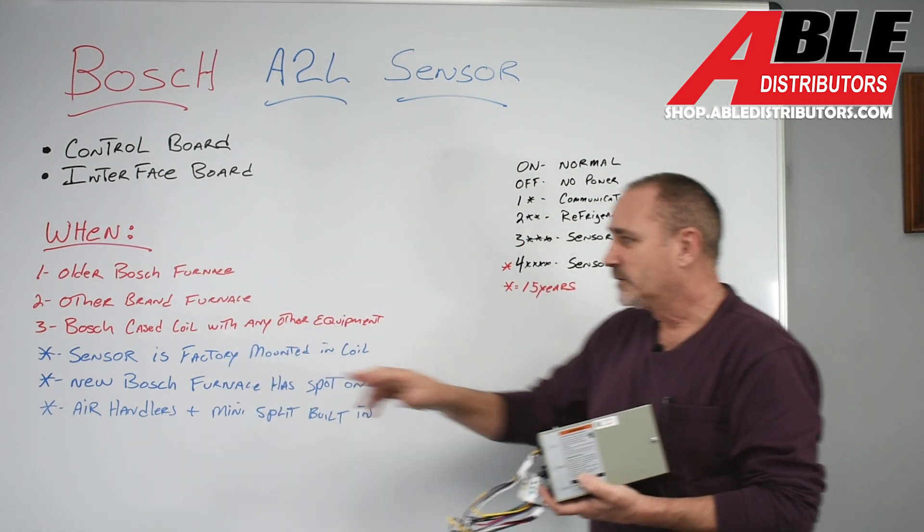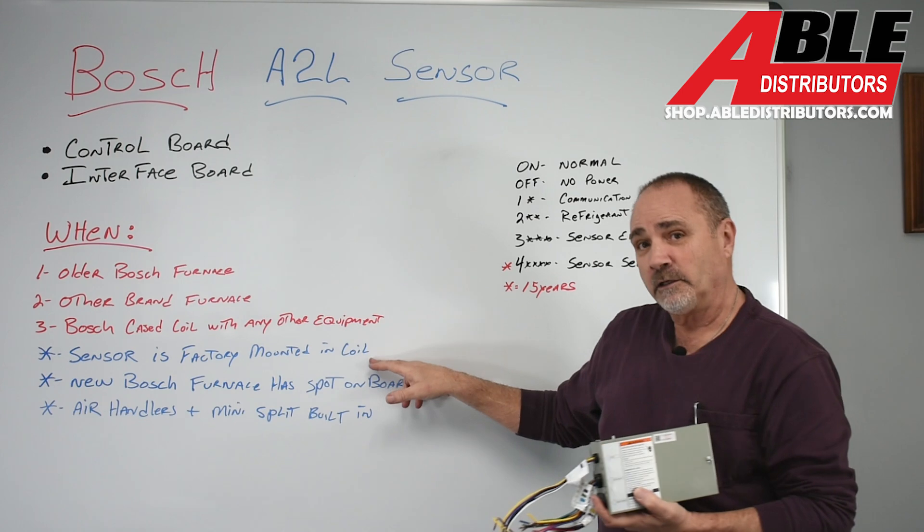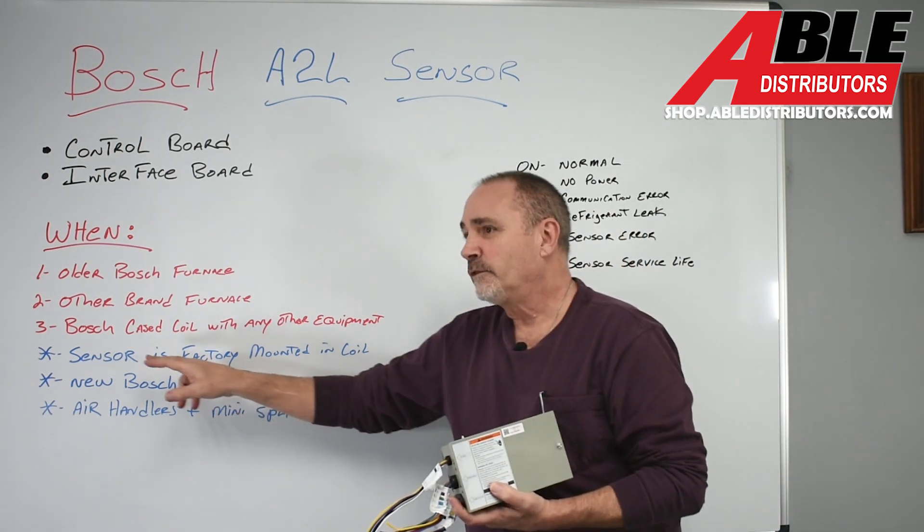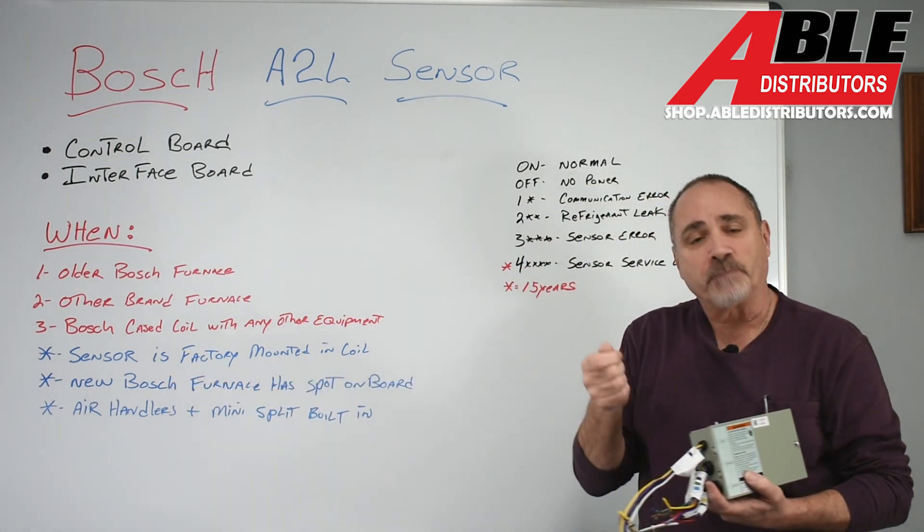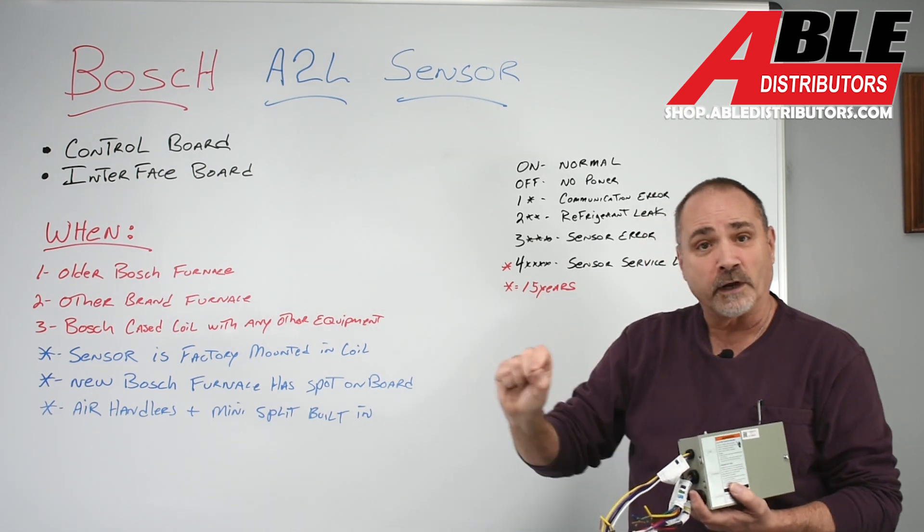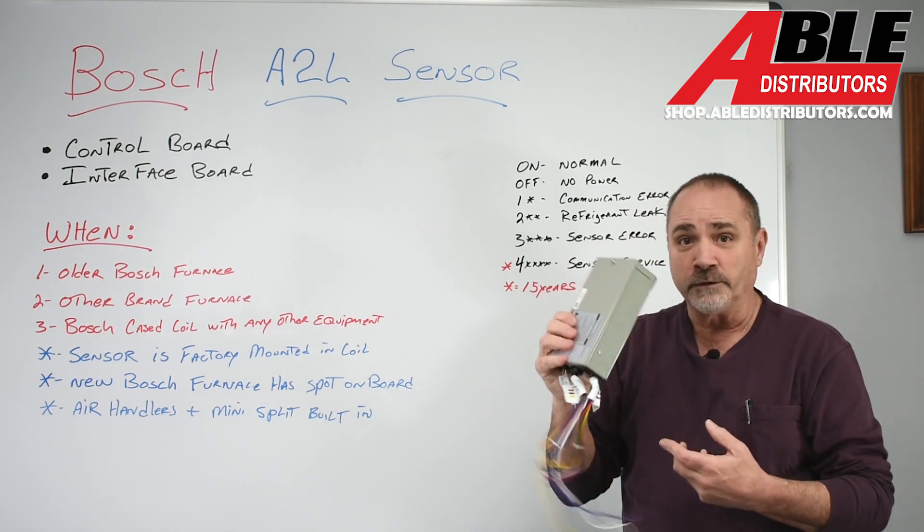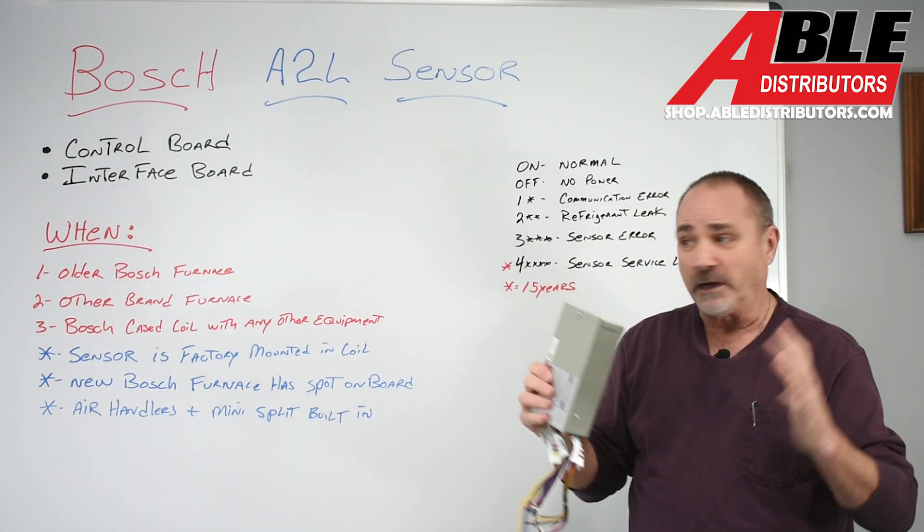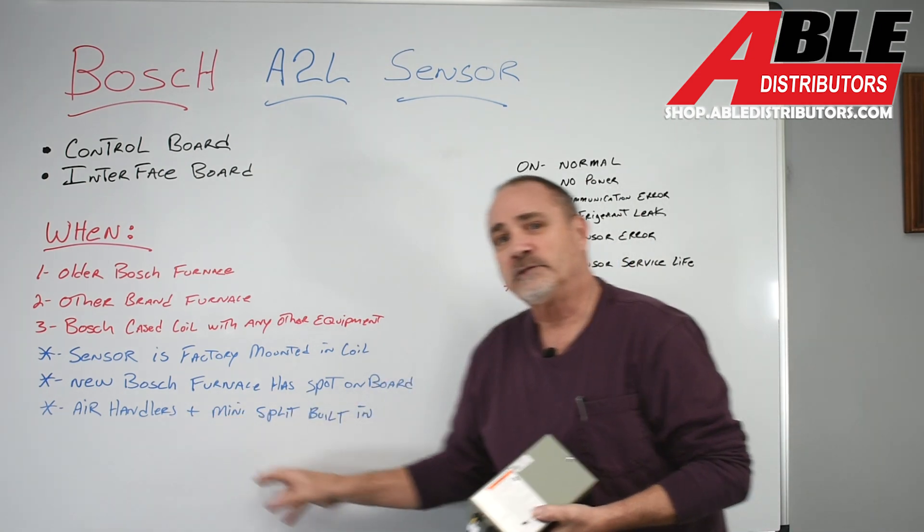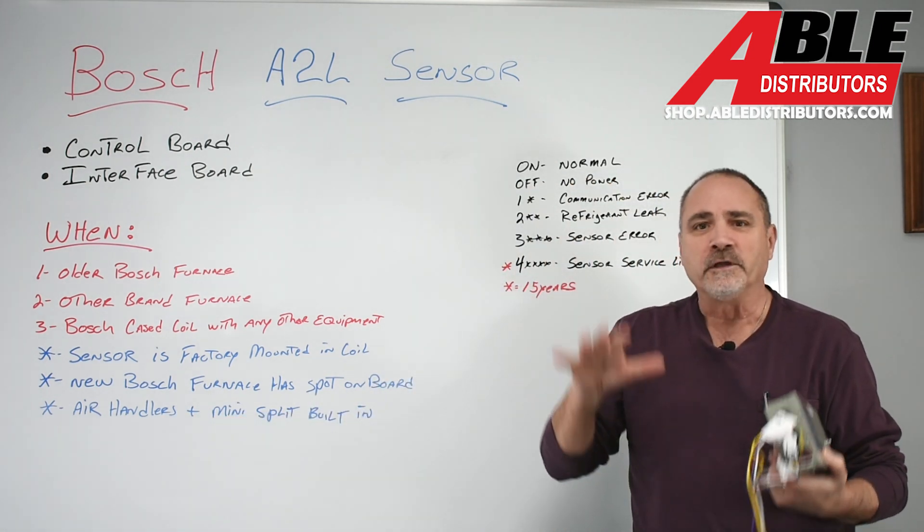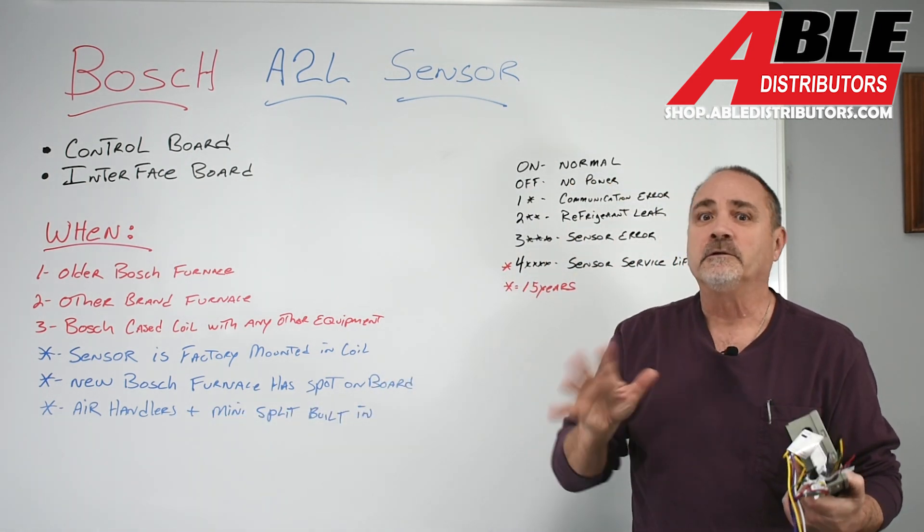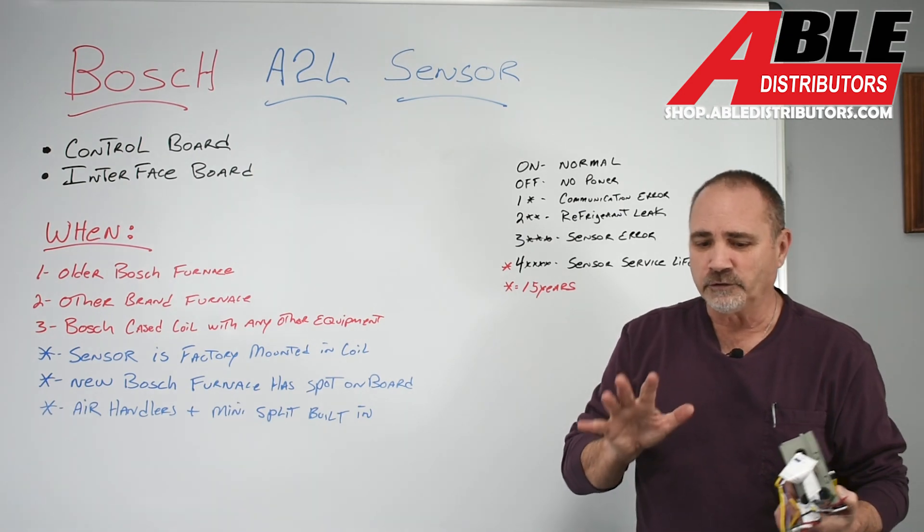You don't need this, so the sensor is factory wired in the new coils. With the new Bosch furnace, there's a spot on that control board for the sensor to plug right into the control board. So you won't need this if you install a matched pair. The air handlers and the mini splits, all this stuff is built in, wired in, super easy. So we don't have to go too deep on that.